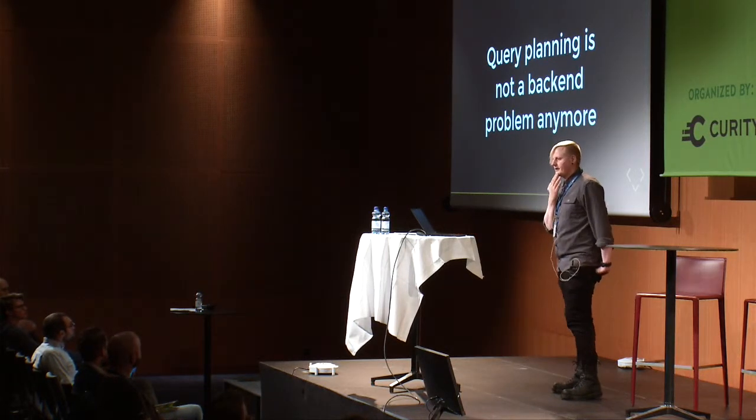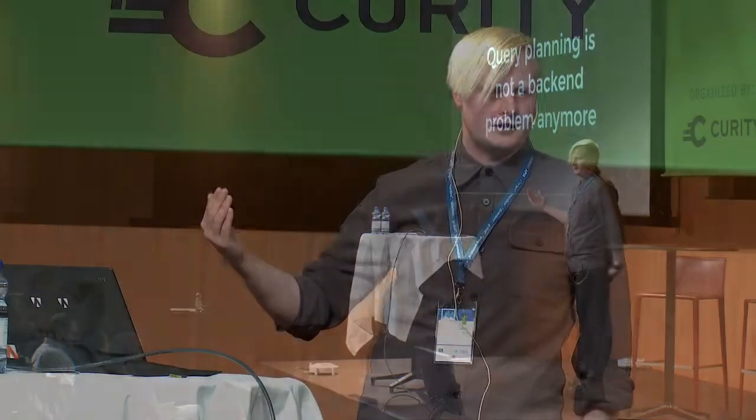Another thing I think will happen as we move towards a more SQL-like API in our backend is that query planning cannot be an afterthought. You can't just say 'use the consumer API and our DBAs will figure it out,' because client developers and consumers of your API will really be able to create difficult performance situations. They also need to be able to understand why they are doing that — so they need something like an explain plan.